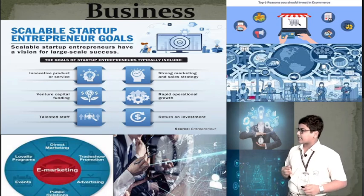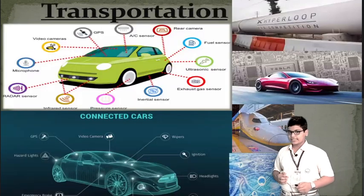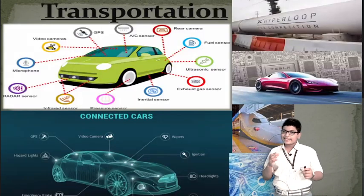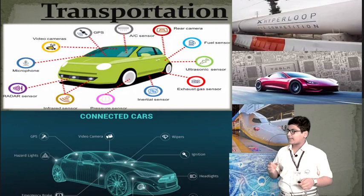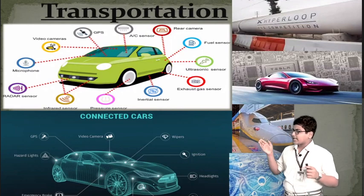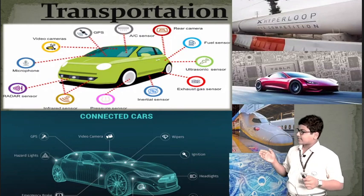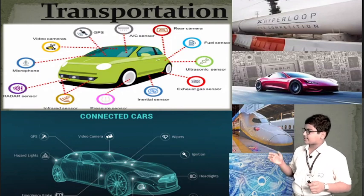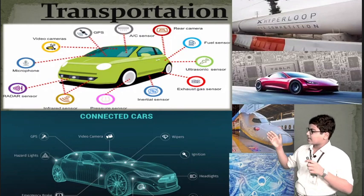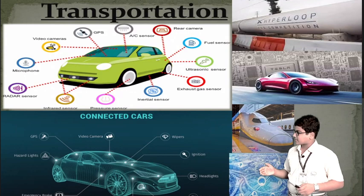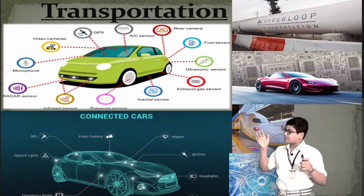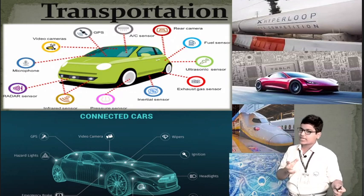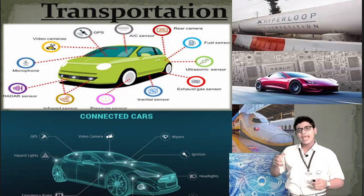Next is our transportation sector. The future vehicle will be fully AI automated, featuring infrared sensors, inertial sensors, pressure sensors, radar sensors, exhaust gas sensors, ultrasonic sensors, GPS, AC sensors, rear cameras, video cams, microphones, and more.